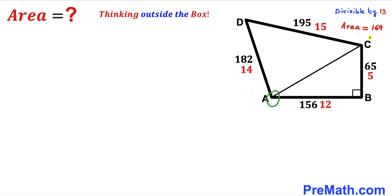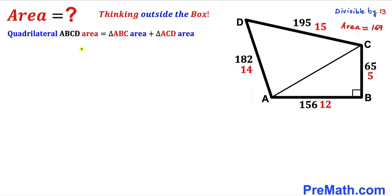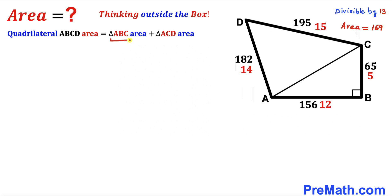I have connected the two vertices A and C, and as a result we get two triangles: right triangle ABC and triangle ACD. The area of quadrilateral ABCD is going to be equal to the area of triangle ABC plus the area of triangle ACD. So our task is to calculate both of these triangle areas.